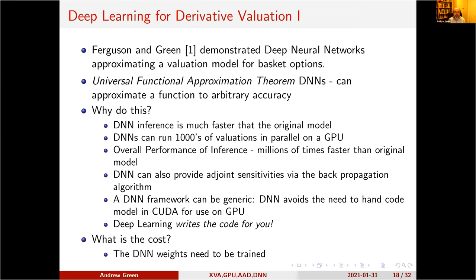The DNN can directly provide adjoint sensitivities, and it can also be generic — this is one of the key elements. Instead of having to hand-code each model in CUDA for GPU use, we train a deep neural network and build a DNN framework within our XVA platform. It becomes generic: you need to do some work to build the calculation of the state variables to feed into the deep neural network, but in essence deep learning writes the code for you.